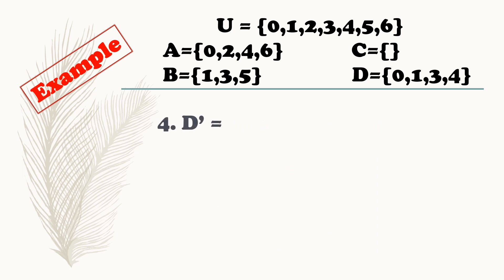Next, complement of set D. What are the elements of set D? 0, 1, 3, 4. So ano yung elements na wala kay set D na nasa universal set? 2, 5, 6. So the complement of set D is equal to {2, 5, 6}.